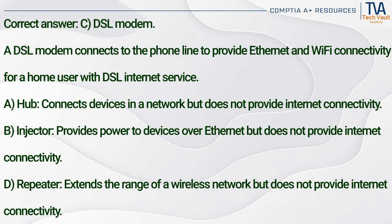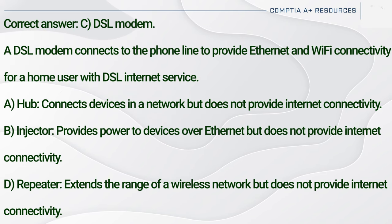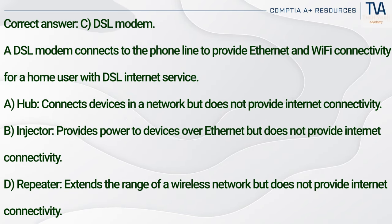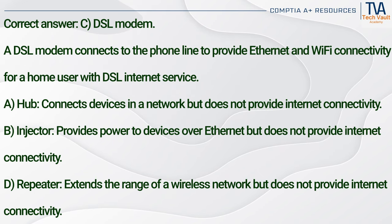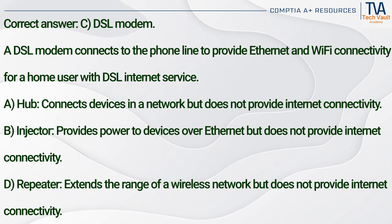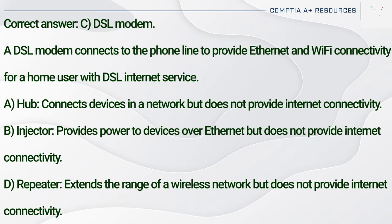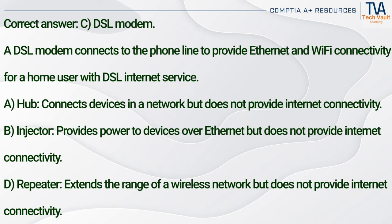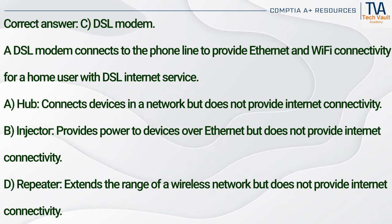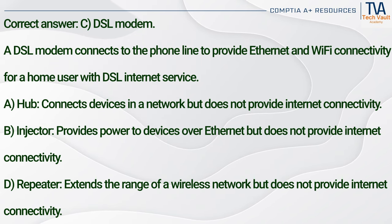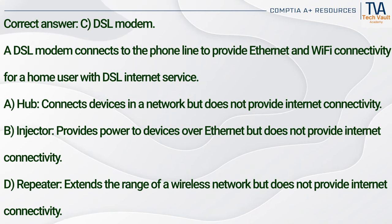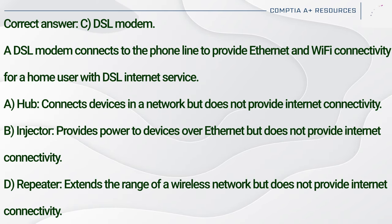Correct answer: C. DSL modem. A DSL modem connects to the phone line to provide Ethernet and Wi-Fi connectivity for a home user with DSL internet service. A hub (A) connects devices in a network but does not provide internet connectivity. An injector (B) provides power to devices over Ethernet but does not provide internet connectivity. A repeater (D) extends the range of a wireless network but does not provide internet connectivity.